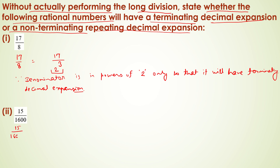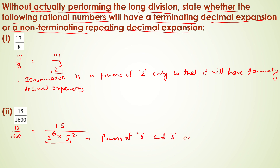Here we have 15 by 1600. We can write 1600 as 2 to the power 6 into 5 to the power 2. Since the denominator is in powers of 2 and 5 only, the decimal expansion of 15 upon 1600 is terminating.